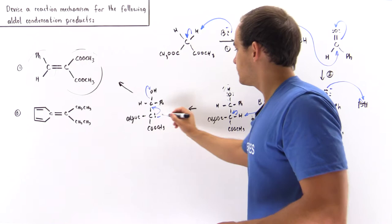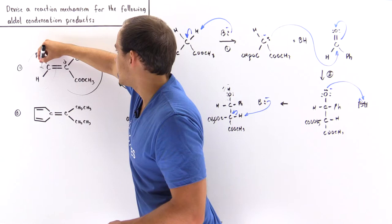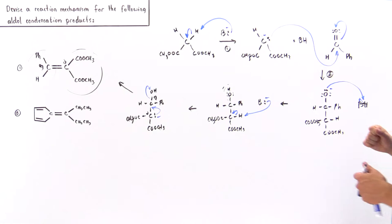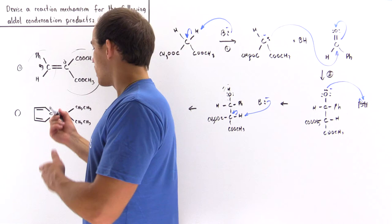The final product formed is our alpha-beta unsaturated compound. This is the alpha carbon, this is the beta carbon, and together they form our alpha-beta unsaturated product. This completes the reaction mechanism for the formation of product number one.